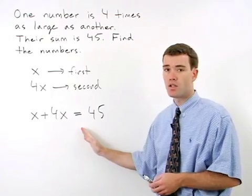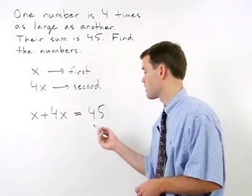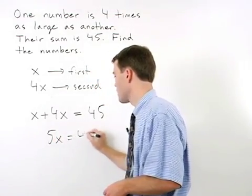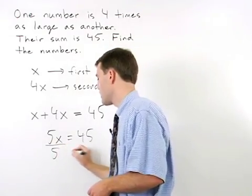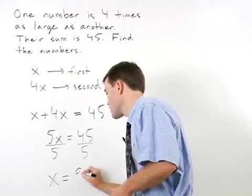Now we have an equation and we can solve for x. We start by simplifying the left side to get 5x equals forty-five. Divide both sides by five and x equals nine.